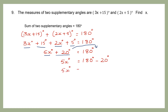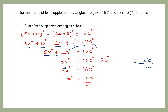So 5x degrees equals 180 minus 20, which is 160 degrees. If 5x is 160, then x degrees equals 160 divided by 5. Let's do short division: 1 is small so I take the next digit — 16 divided by 5 gives 3 with remainder 1, making 10, and 5 twos are 10. So I have found the value of x to be 32 degrees.